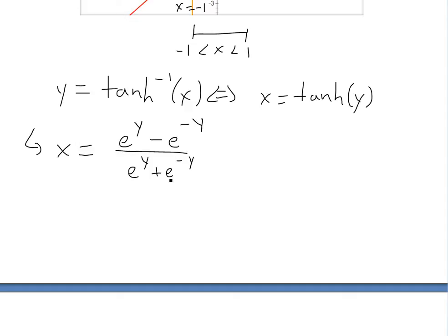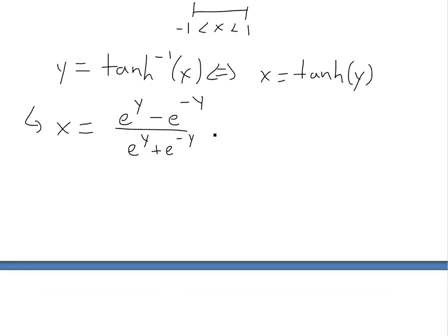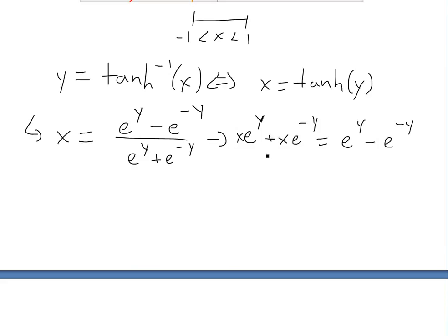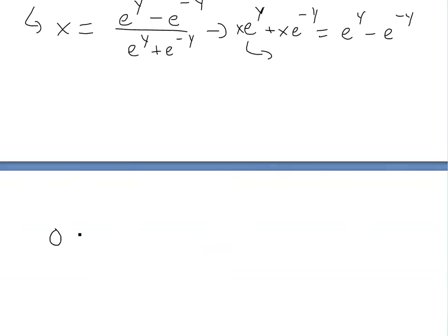We multiply both sides by the denominator, so we get x times (e to the y plus e to the negative y) equals e to the y minus e to the negative y. Moving everything to the right side: zero equals e to the y minus x times e to the y, minus e to the negative y minus x times e to the negative y.